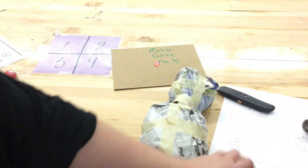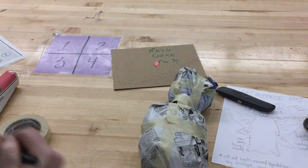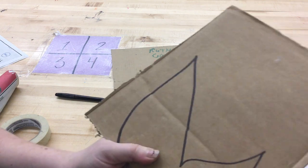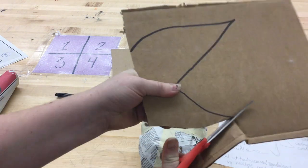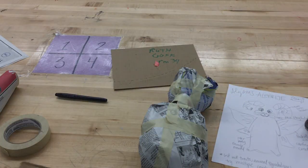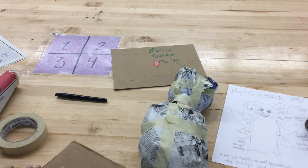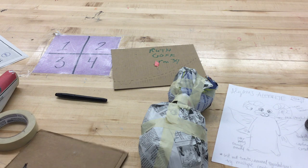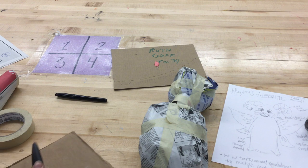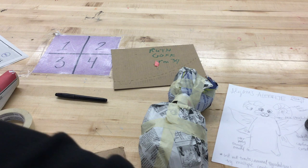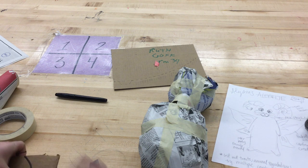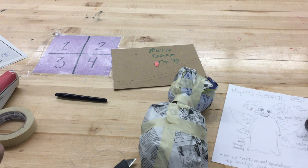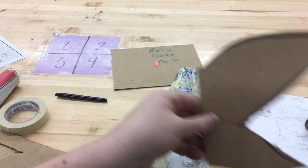The next thing we might want to do is we might want to add our wings. We're going to do that out of cardboard. Okay, so you're going to cut that out. Cardboard can be a little tricky, but here we go.